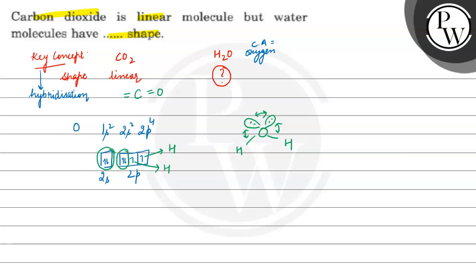CO2 is somewhat like this linear shape, but this H2O molecule somewhat looks like angular shape.